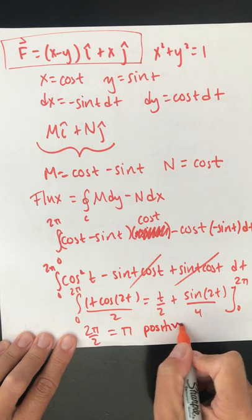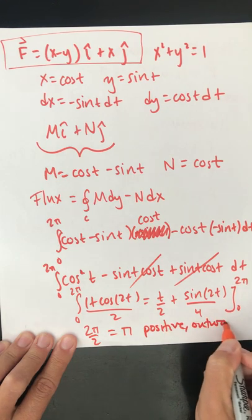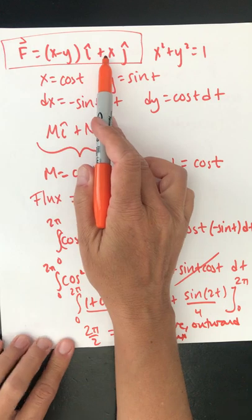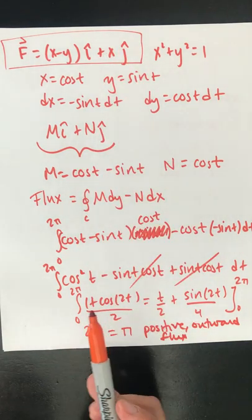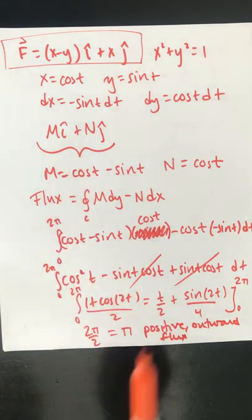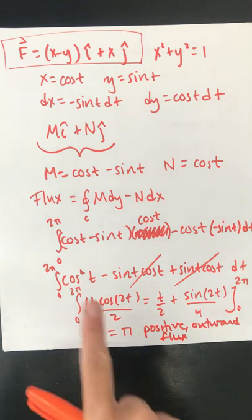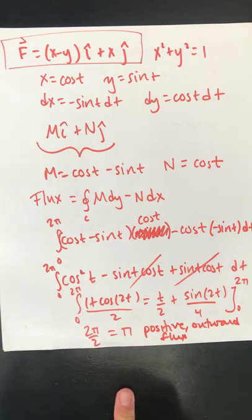And remember, this is my positive outward flux. It is how much of this field operates on the normal vector across this closed region. So hopefully this is a really good example for you of the difference between finding flux and finding circulation curl. Flux we can find using the line integral.